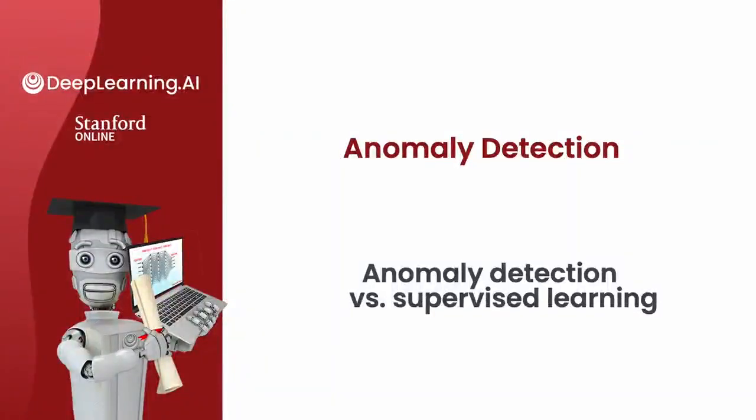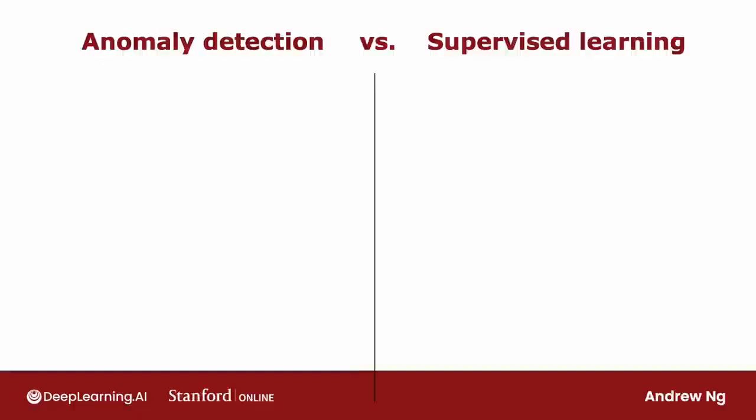When you have a few positive examples with y equals 1 and a large number of negative examples with y equals 0, when should you use anomaly detection and when should you use supervised learning? The decision is actually quite subtle in some applications. An anomaly detection algorithm will typically be the more appropriate choice when you have a very small number of positive examples.